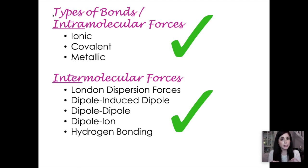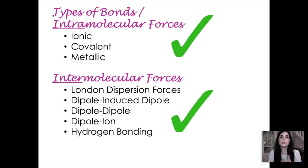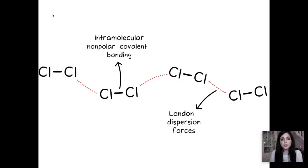We also talked about intermolecular forces — forces between different molecules. So if you have very good interpersonal skills, that means you're good at communicating with other people. Inter means between different things, so it's the force of attraction between different molecules or substances. There are five types we talked about in class: London dispersion, dipole-induced dipole, dipole-dipole, dipole-ion, and hydrogen bonding. These intramolecular forces and bond types tell us the type of solid something will be and the properties it will have.